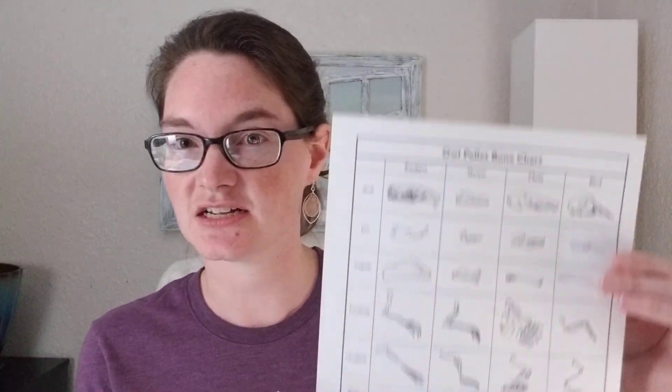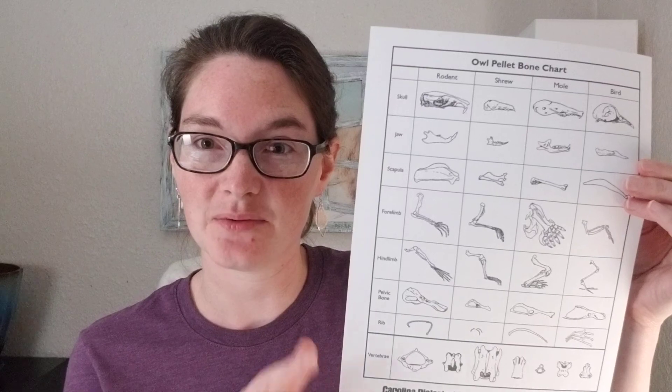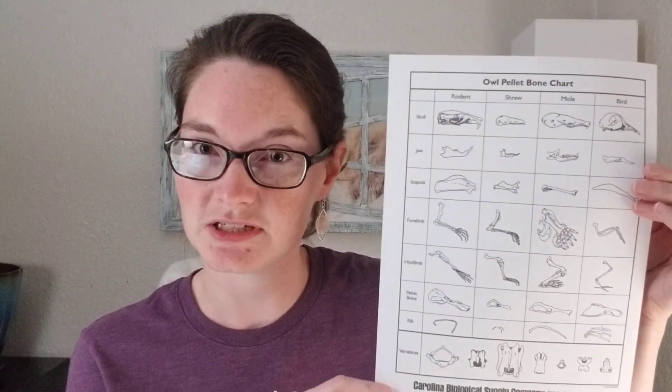You'll probably have your students work in pairs. You can have a plate to put their owl pellet on, and they'll work together to break it apart. They'll wear their gloves and use tweezers to break it apart and see if they can find bones. They can pull out all the bones and use the bone chart to identify what types of bones are in there — and maybe even identify what type of animal the owl consumed.